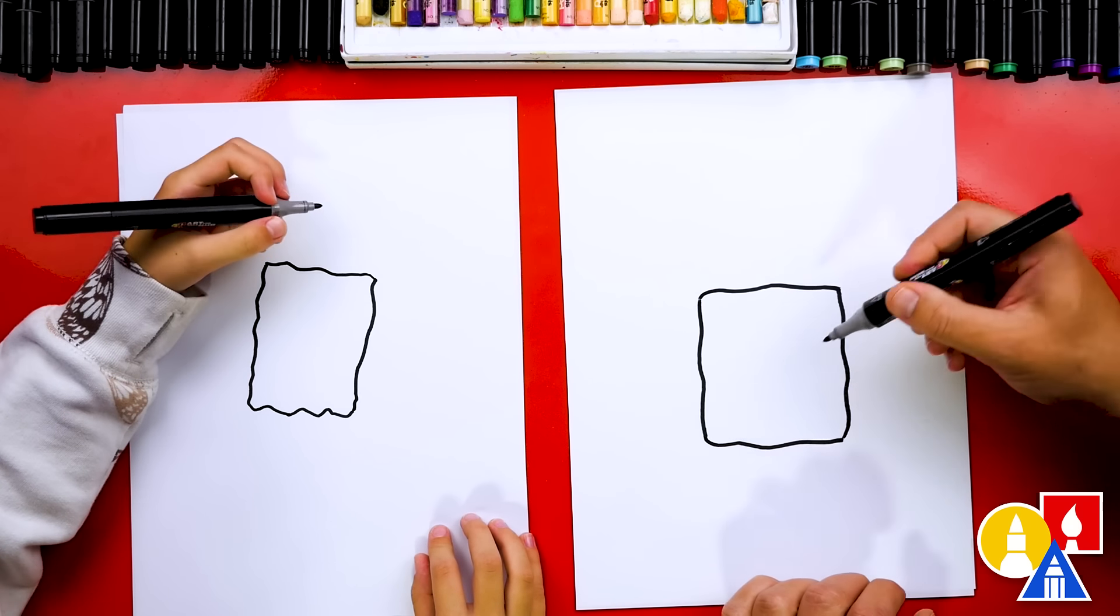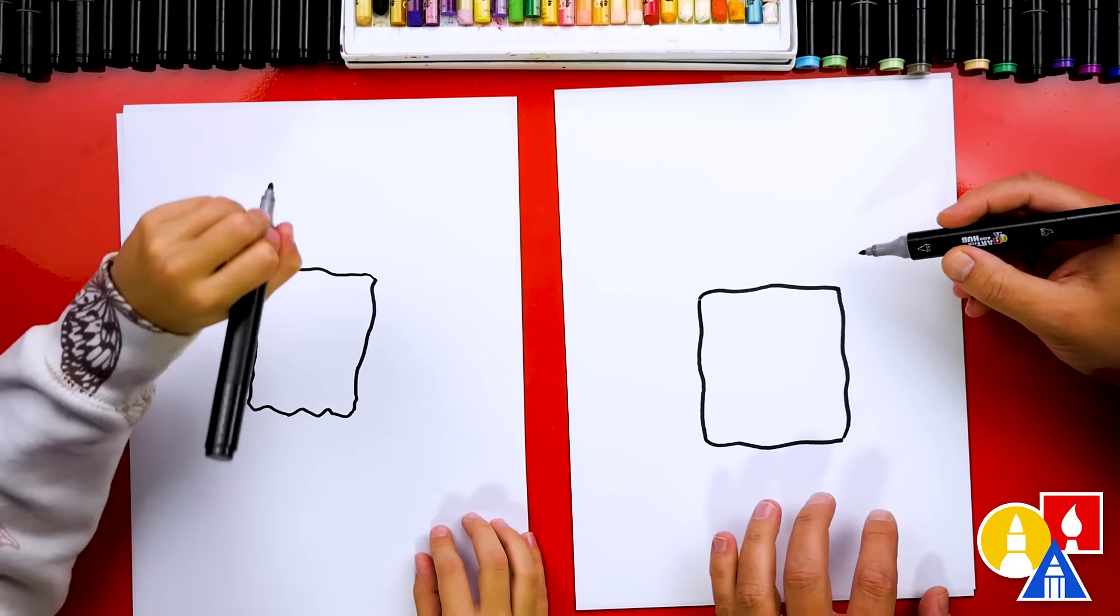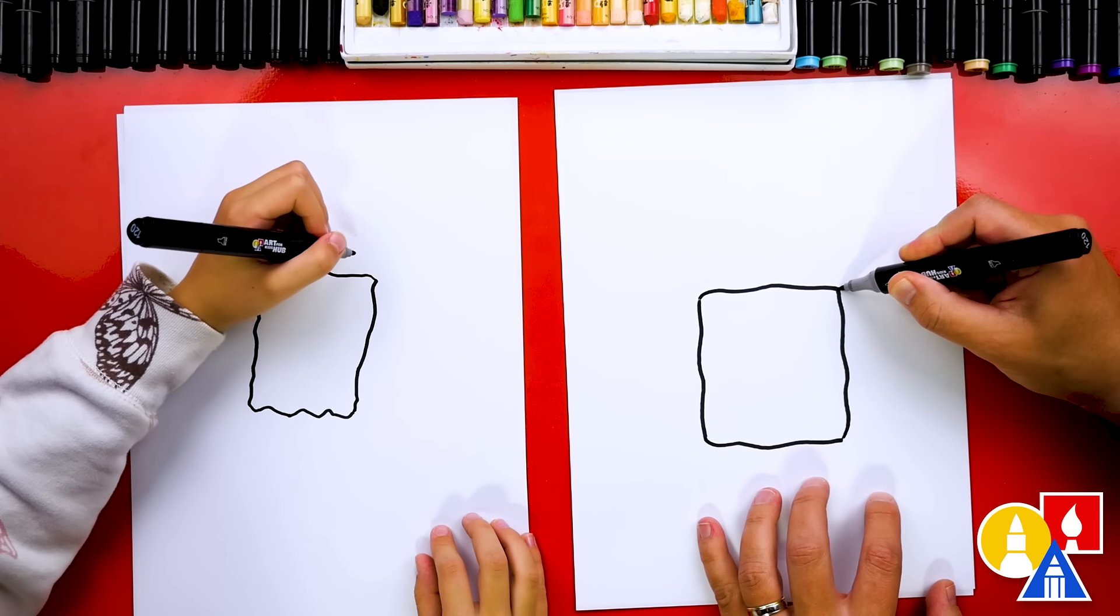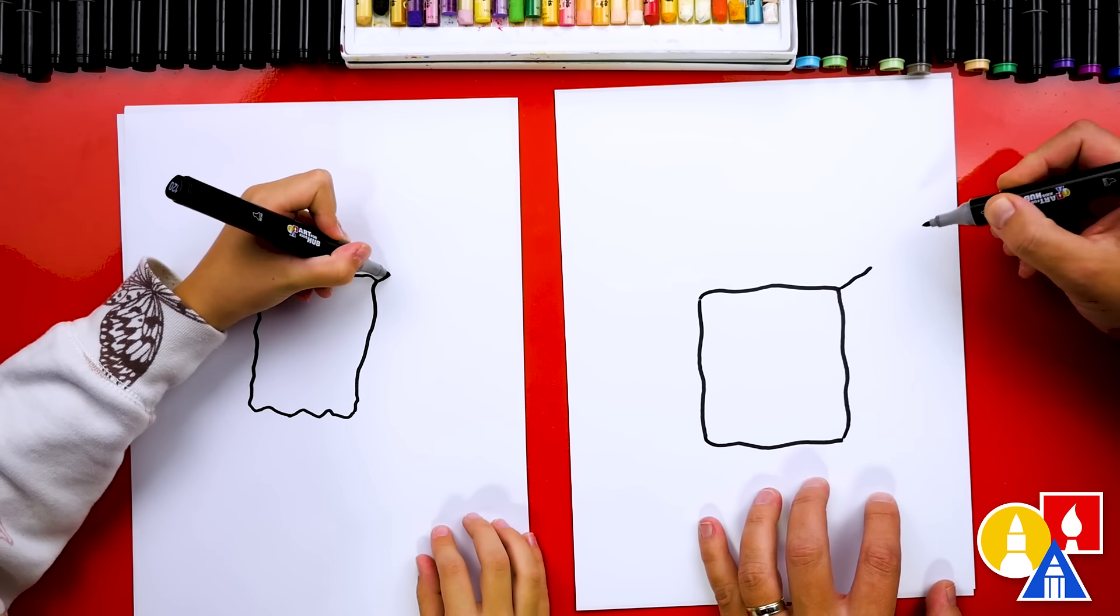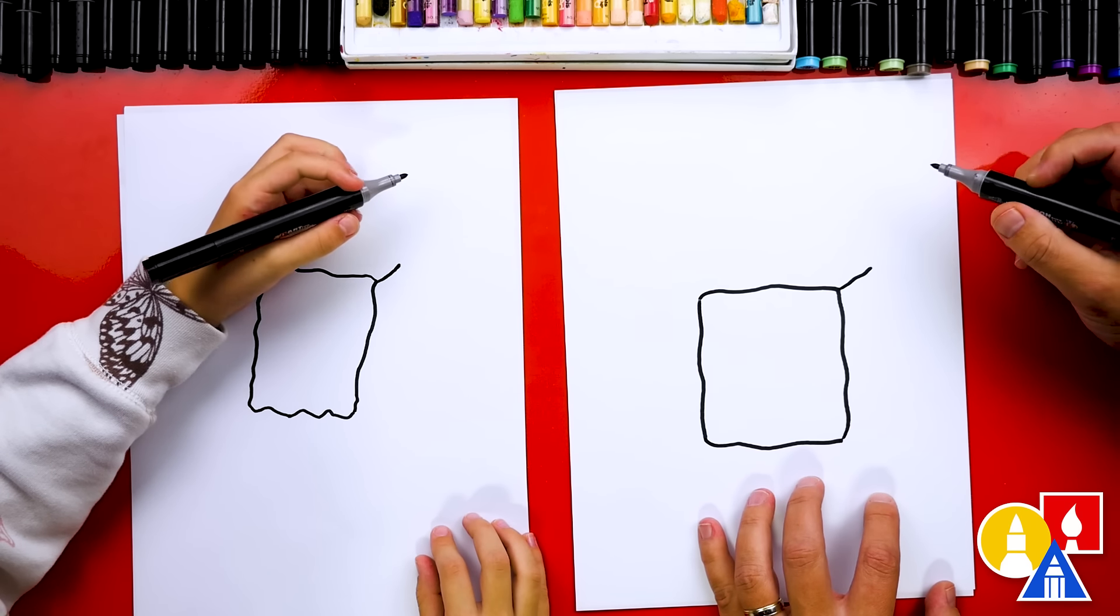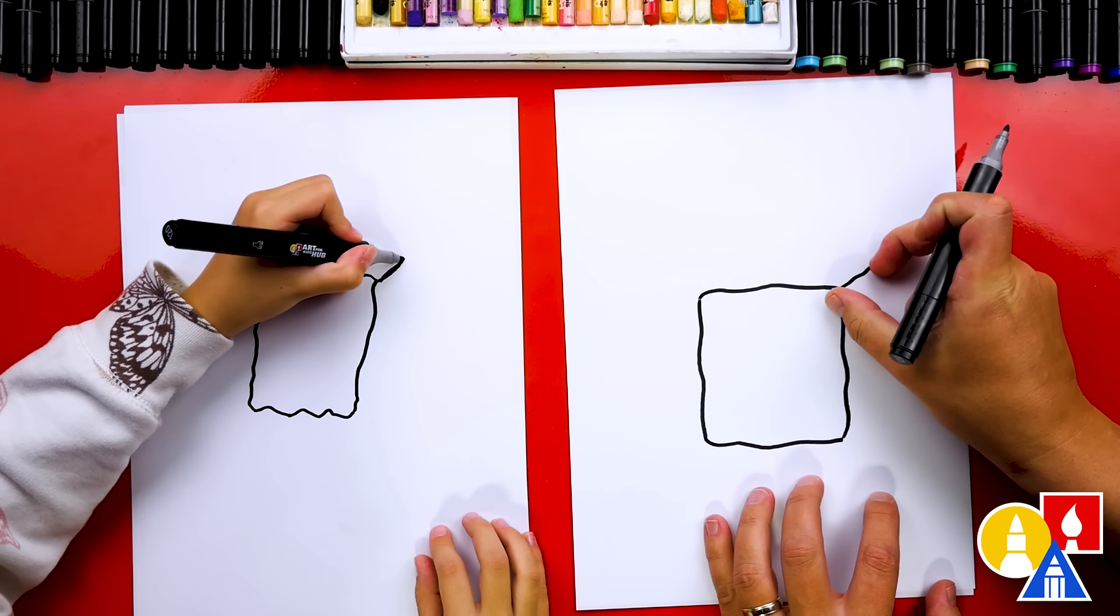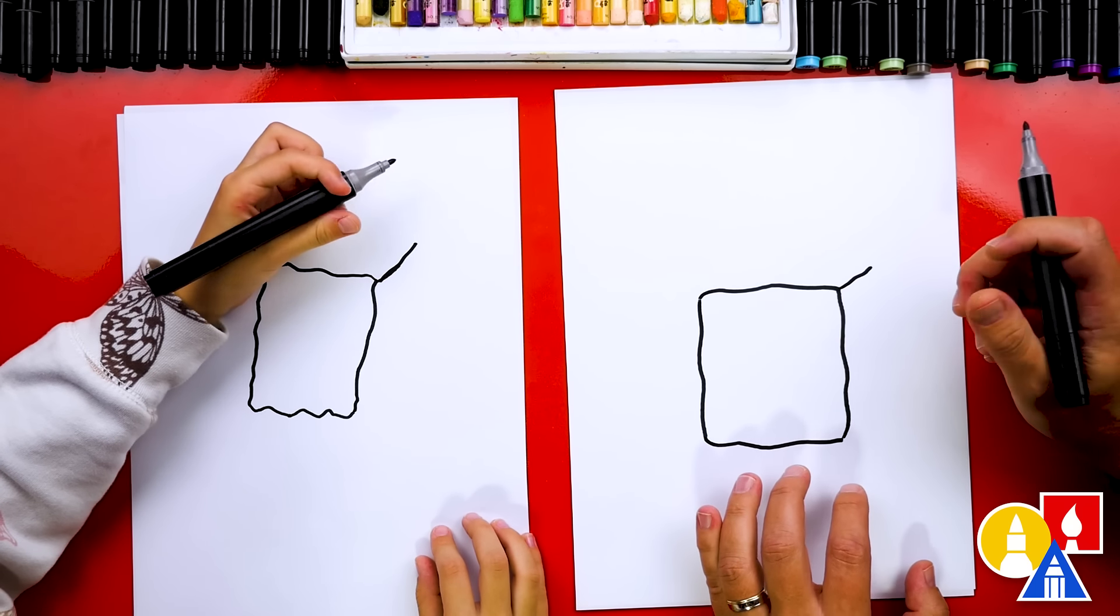Okay. Now we've got our square, but let's make it 3D so that it looks like a cube. We're going to draw diagonal lines and we're going to draw them. We'll draw the first one here. Now this part's a little tricky.